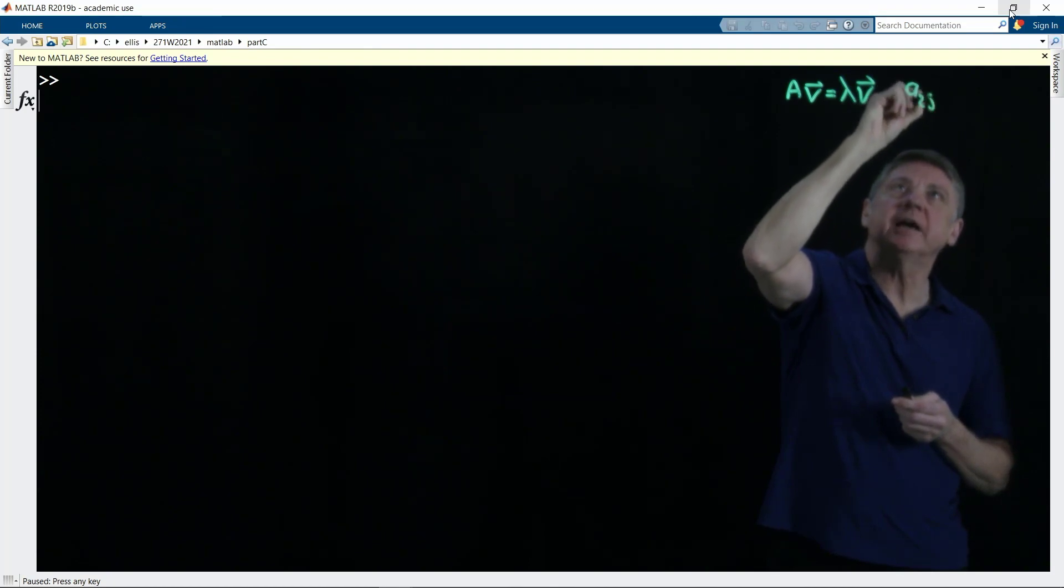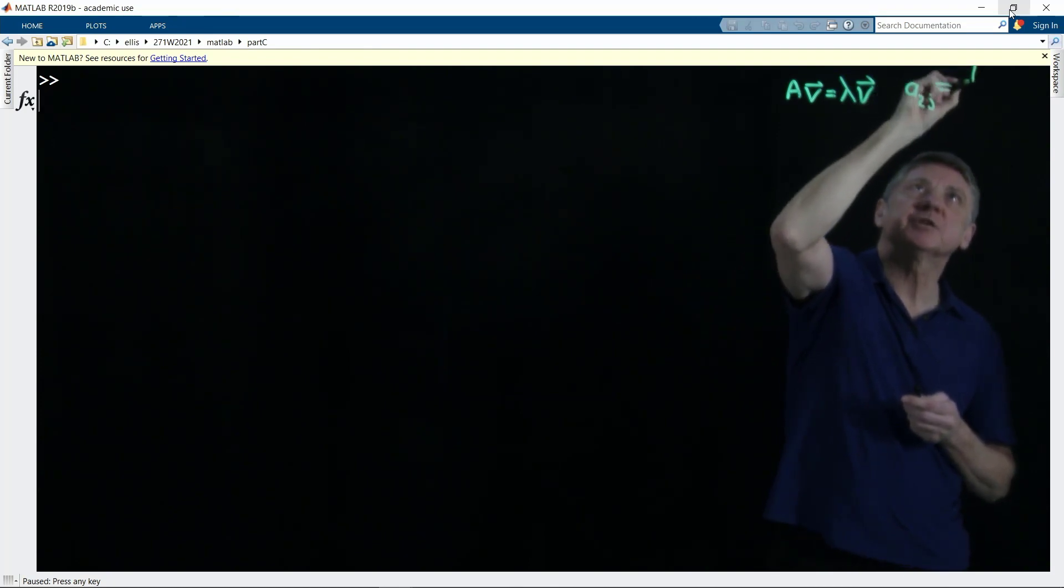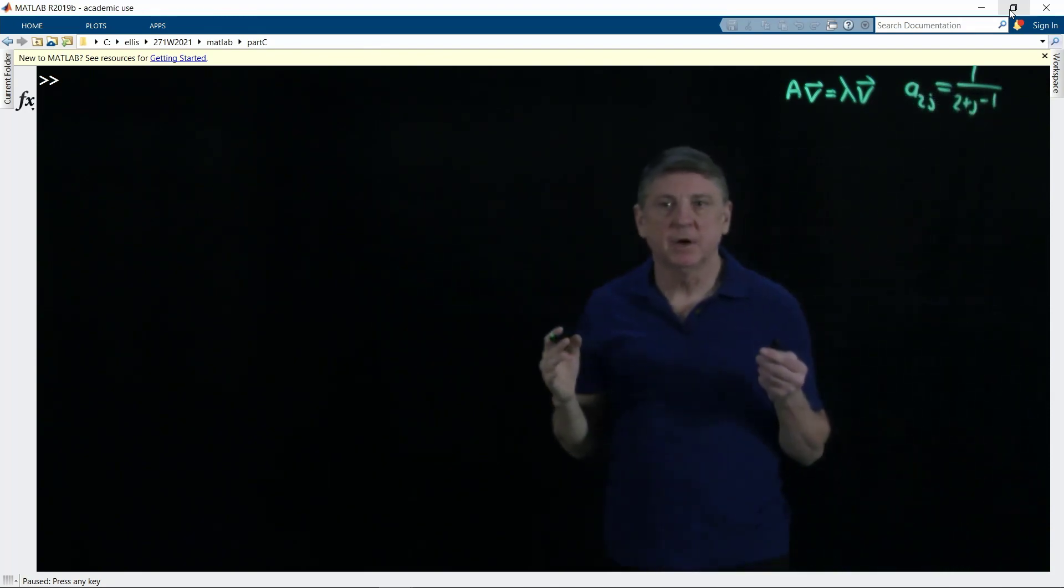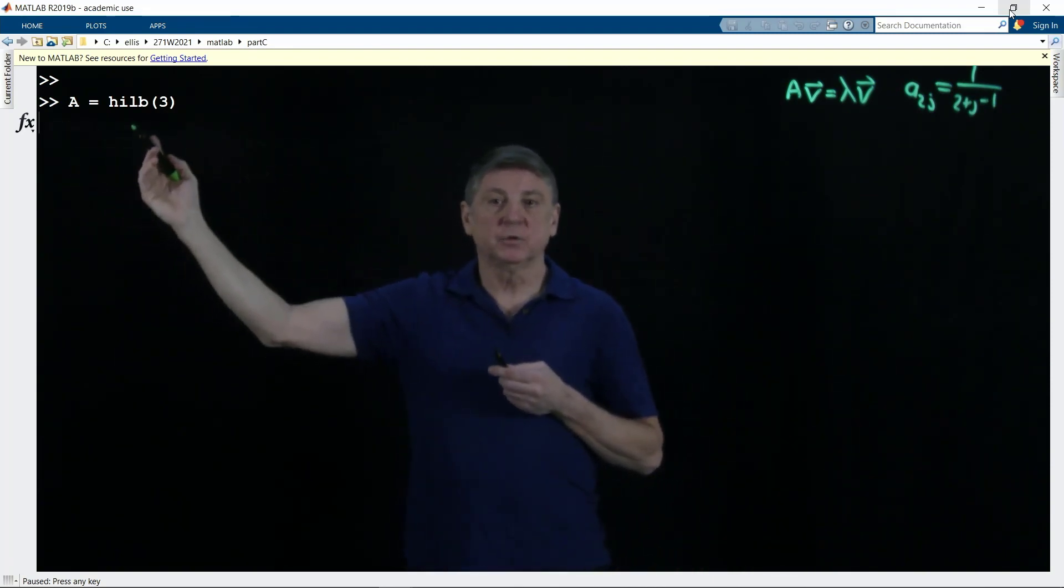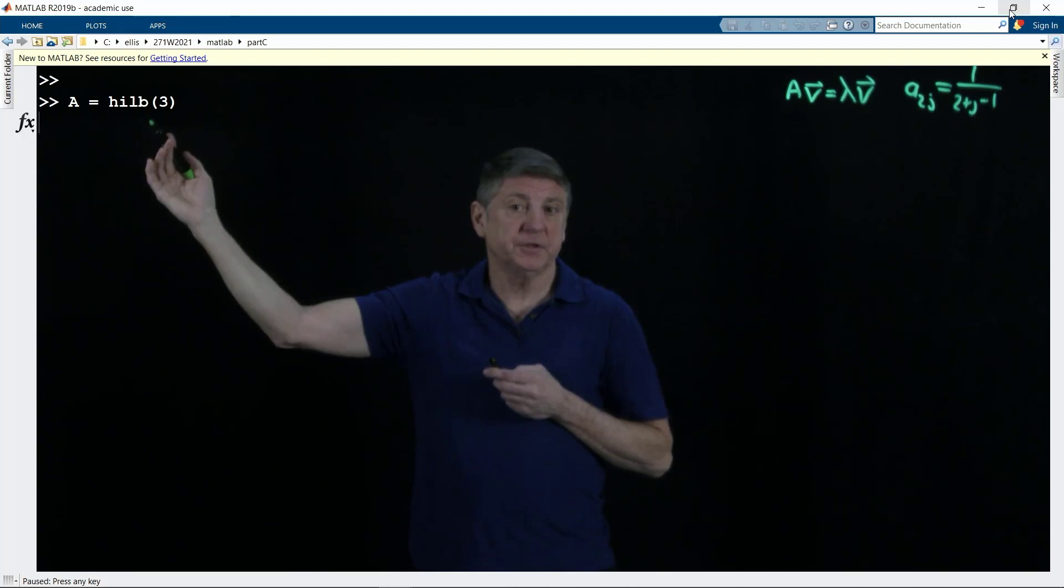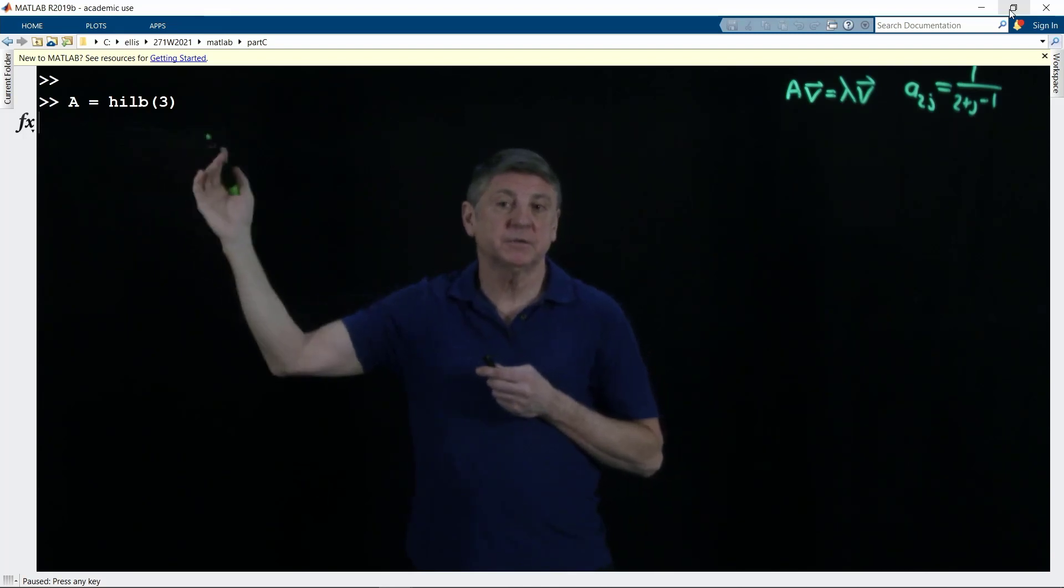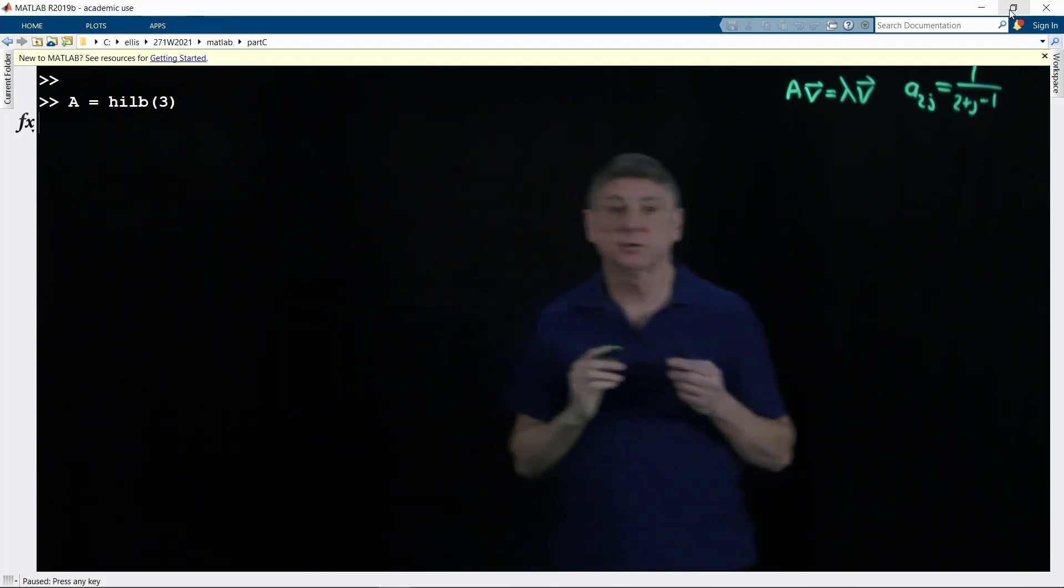Entry IJ of the Hilbert matrix is just one over I plus J minus one. And in MATLAB, we can compute that Hilbert matrix as A equals, and then there's a built-in function to compute it because this is such a common matrix in certain parts of mathematics.